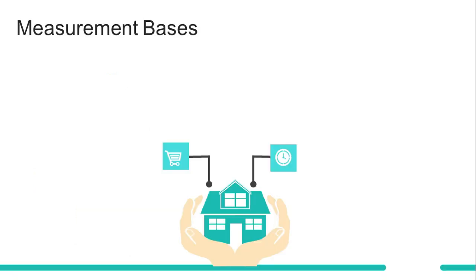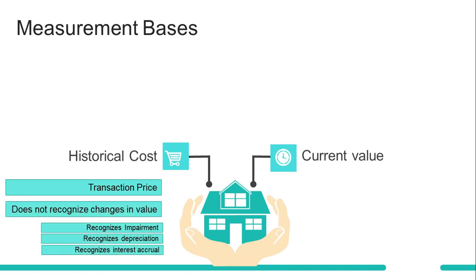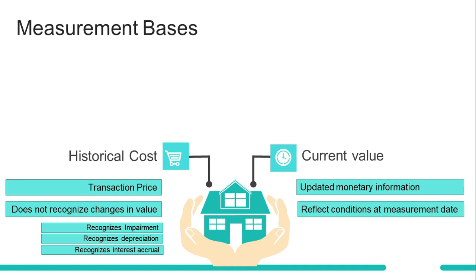The framework recognizes two measurement bases: historical cost and current value. Historical cost could very well be your favorite, as it simply refers to the transaction price. Changes in value are normally not recognized unless it refers to impairment, depreciation, interest accrual, and the like.